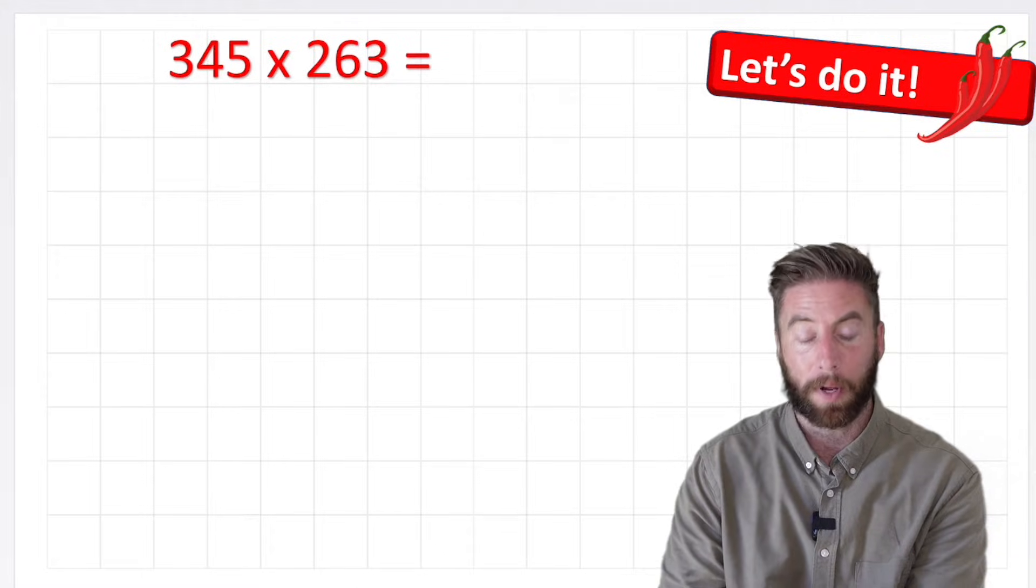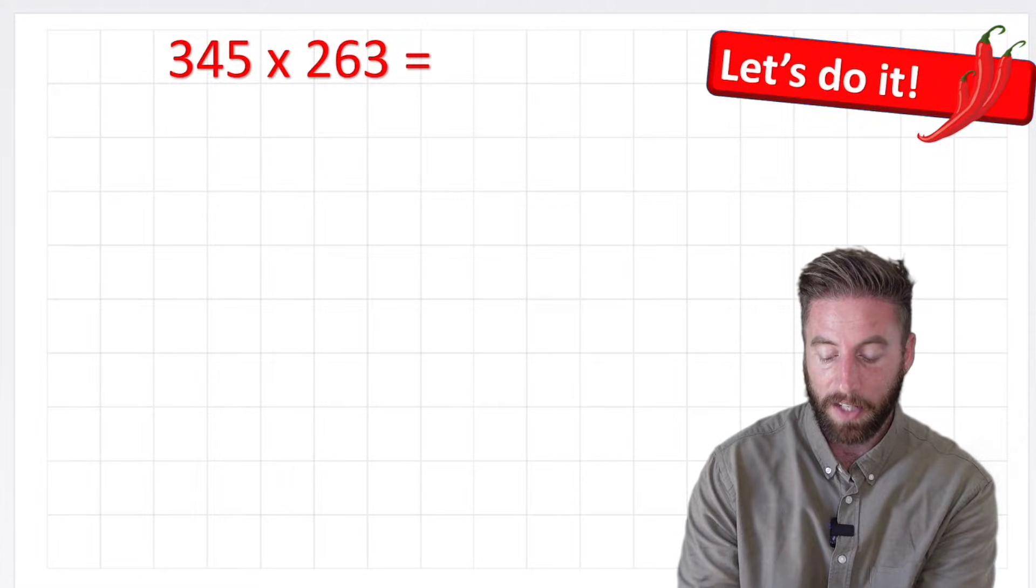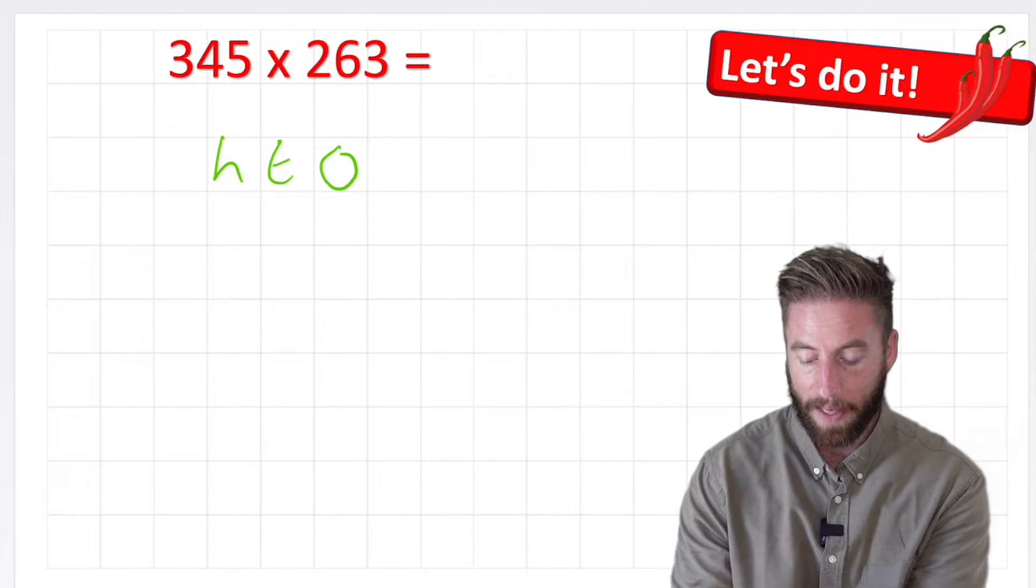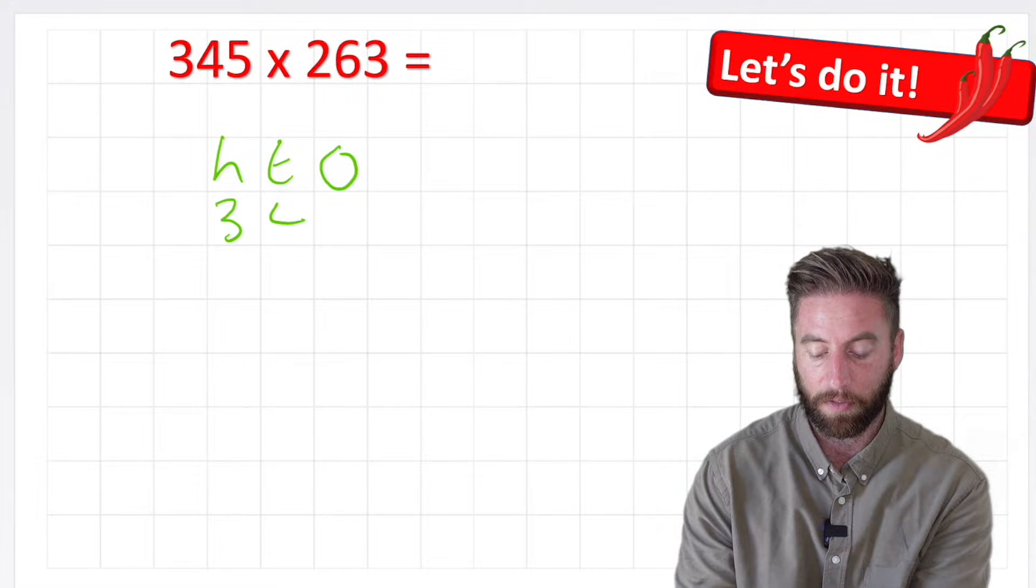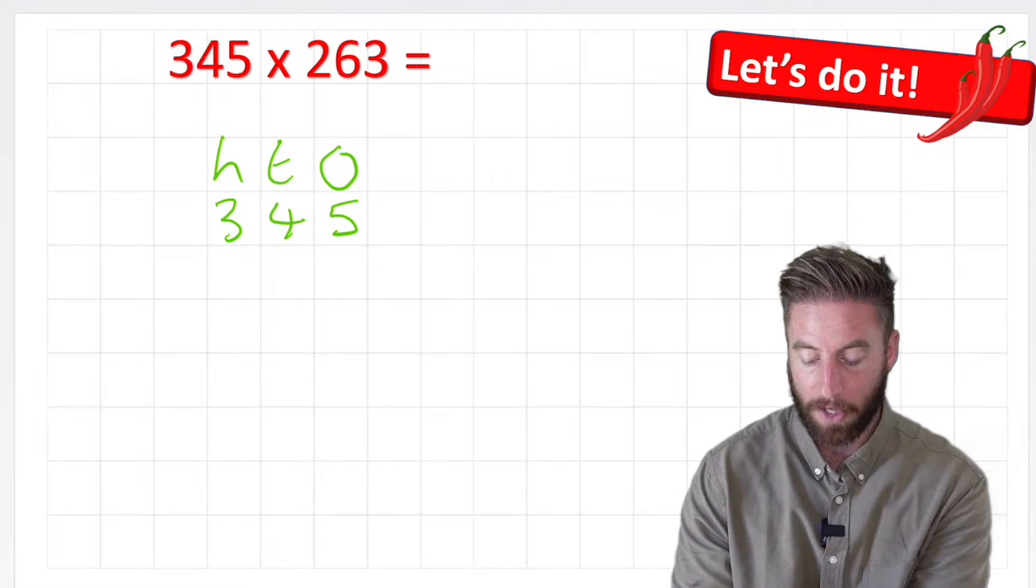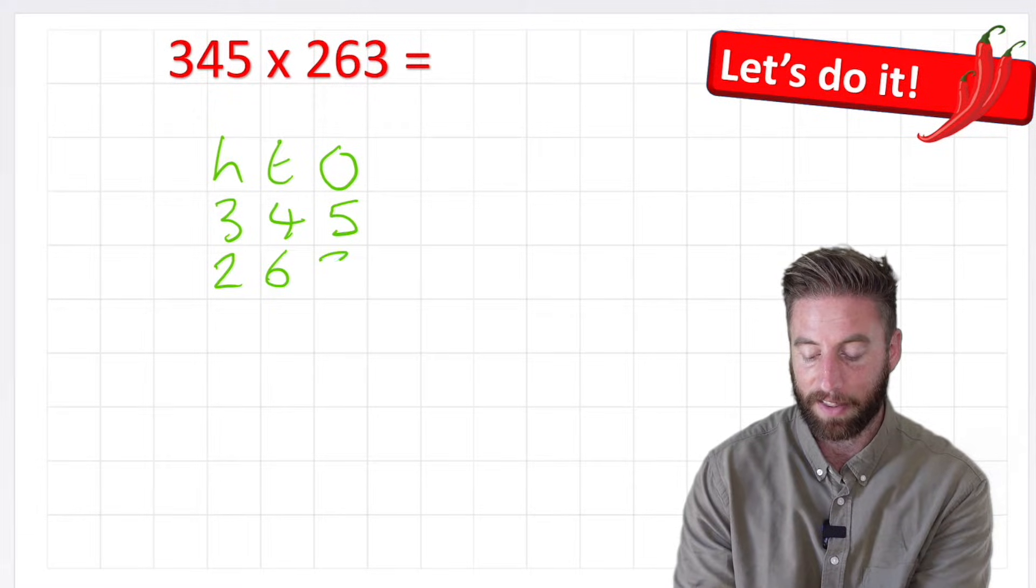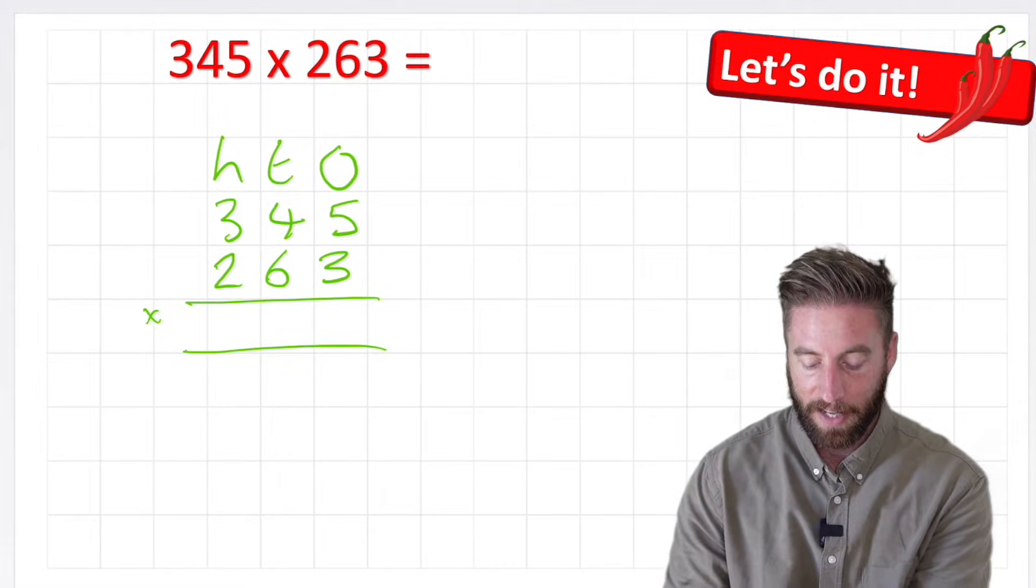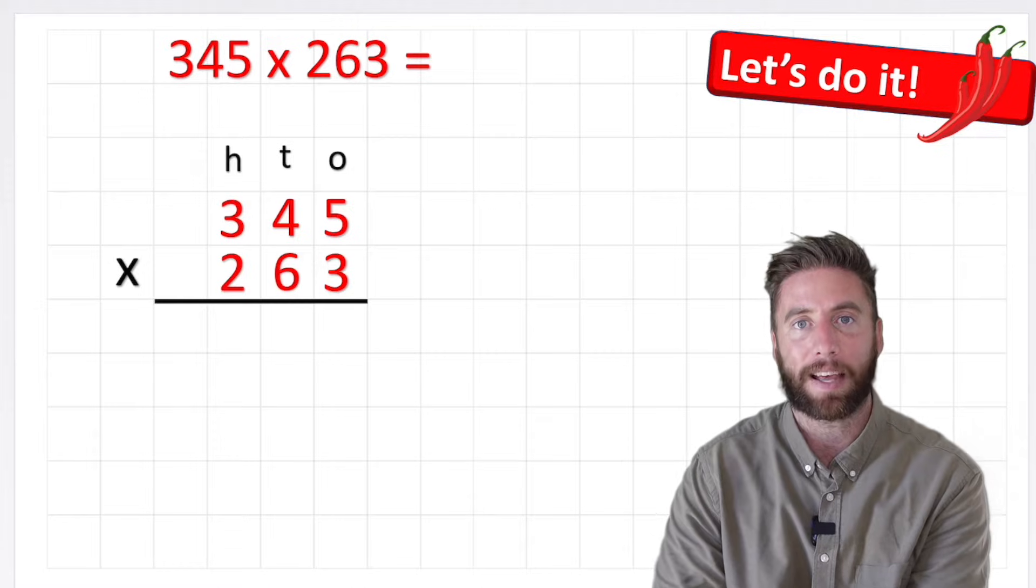So here we have 345 multiplied by 263. First things first, I'm going to put my ones, tens, and hundreds label, and then I can enter my 345, making sure I'm putting everything in the right place, multiplied by 263. Put my multiplication sign, my equals lines, and I'm ready to start.